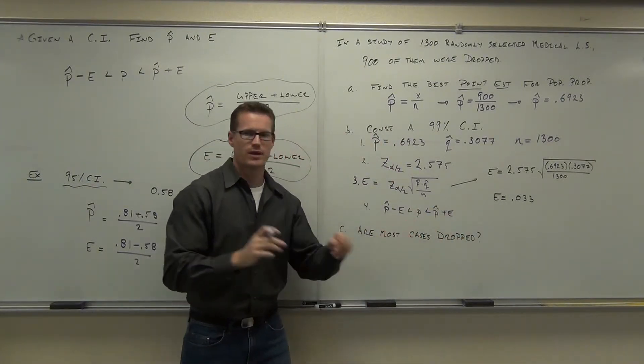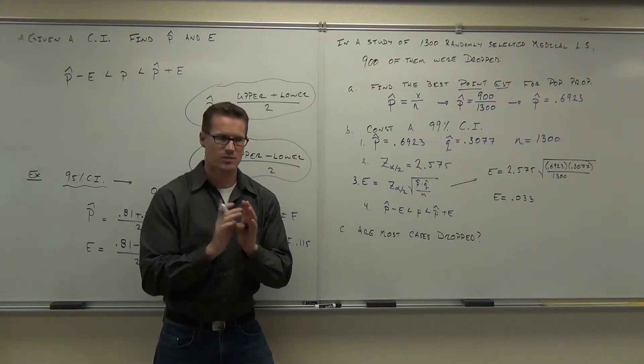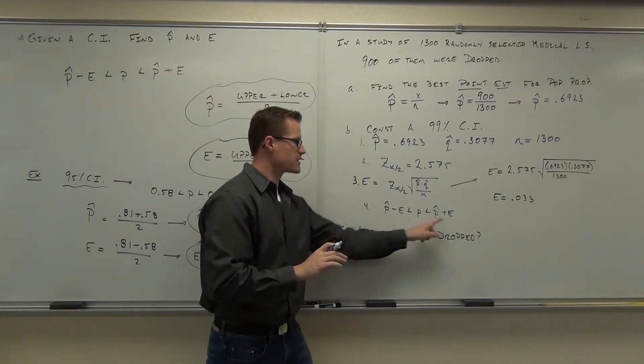p goes in the middle, the actual population proportion. You don't know what it is, but you're going to be a certain amount sure that it's between this range. Find this out for me.